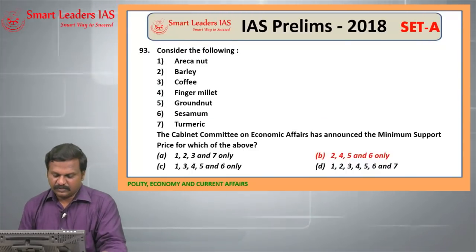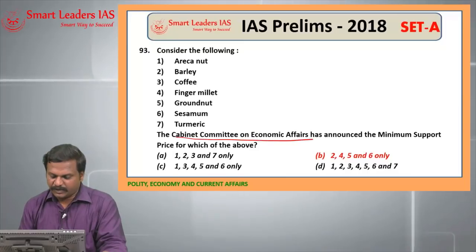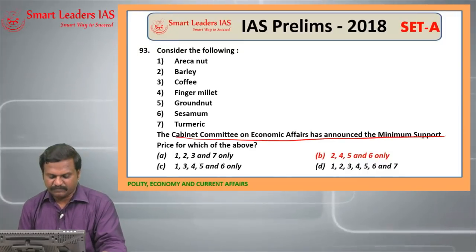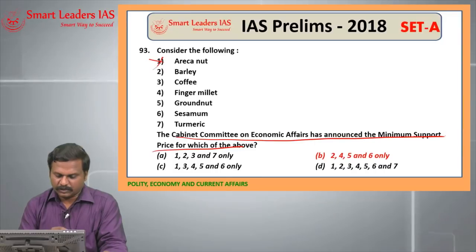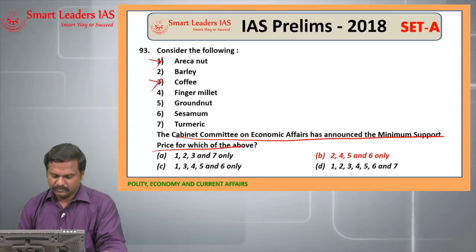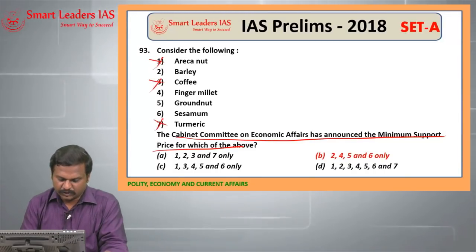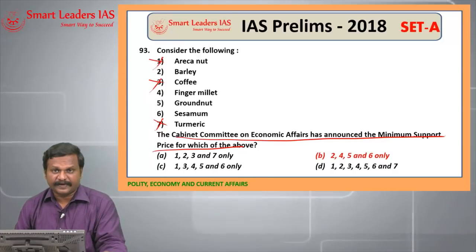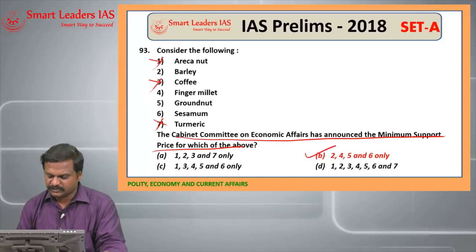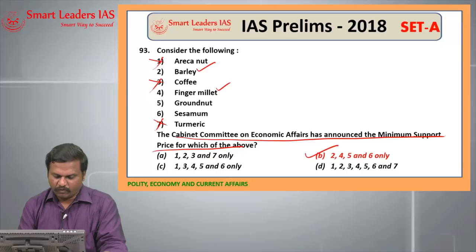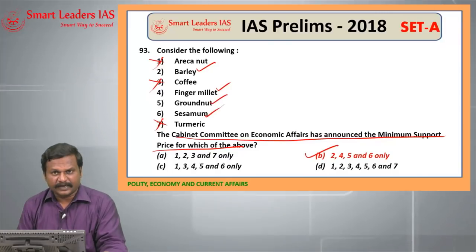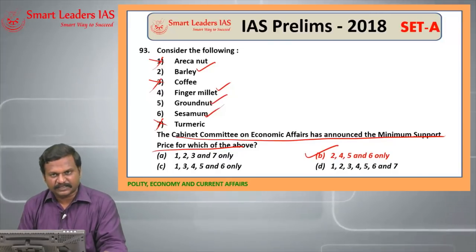93rd question: the Cabinet Committee on Economic Affairs has announced the MSP for which of the above? Options 1, 3, and 7 should not come. So the answer for the 93rd question is B — 2, 4, 5 and 6.